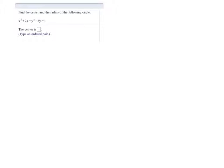So in order to find the center and the radius, the best thing to do is to get this into standard form. The standard form of a circle looks like x minus h quantity squared plus y minus k quantity squared equals r squared.